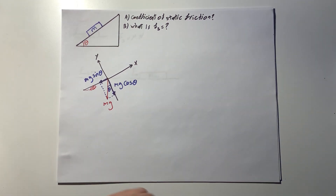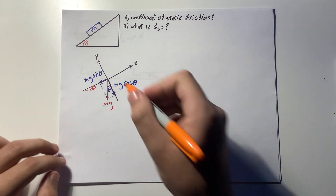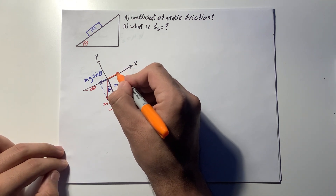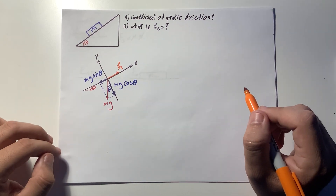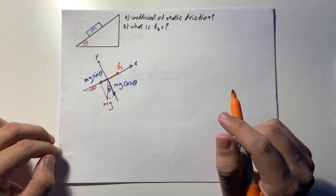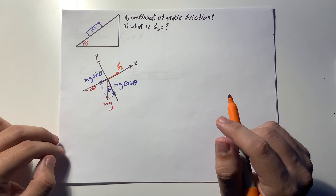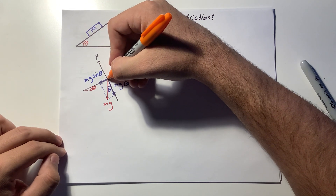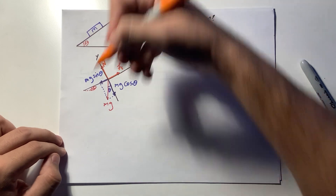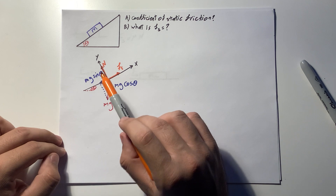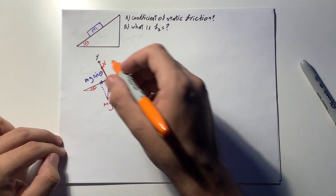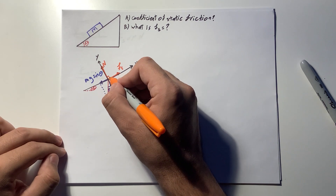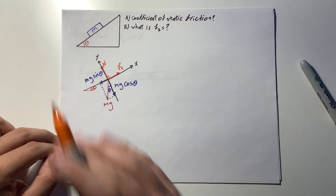There is one more force I forgot to draw: the normal force N, which is perpendicular to the surface. Normal is a mathematical term for perpendicular, so the normal force is always perpendicular to the surface that our object is on.